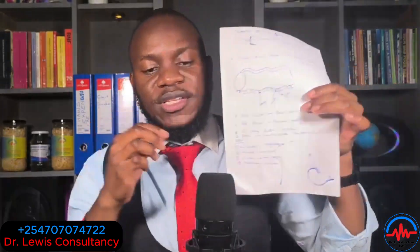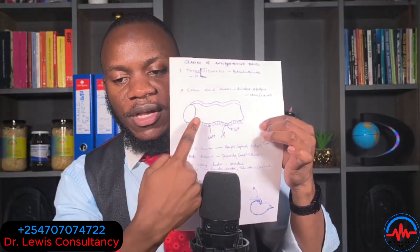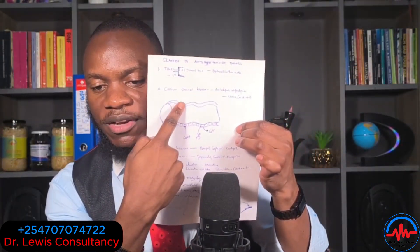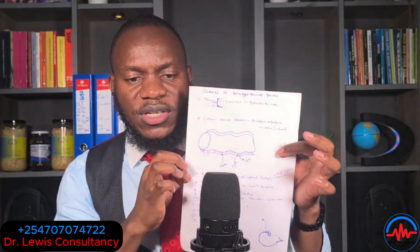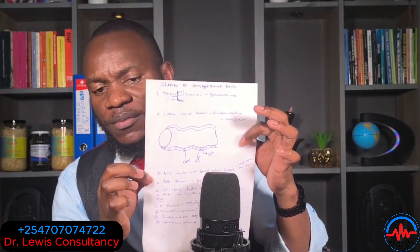Calcium channel blockers — look at this diagram here. This is a blood vessel. Let me use an illustration of the fingers. This is a blood vessel, and within this blood vessel we have smooth muscle cells and endothelial cells lining it.